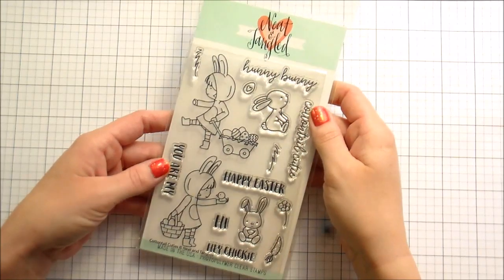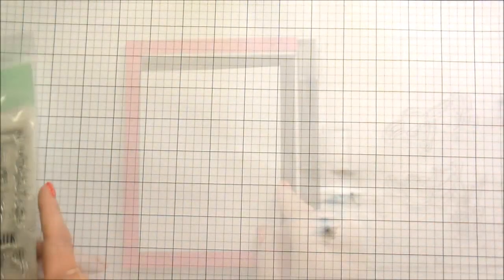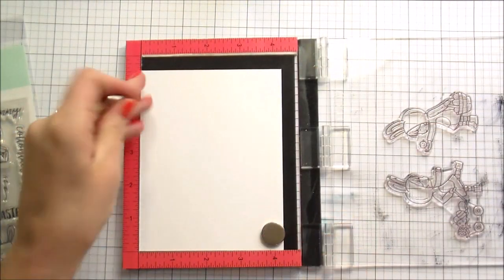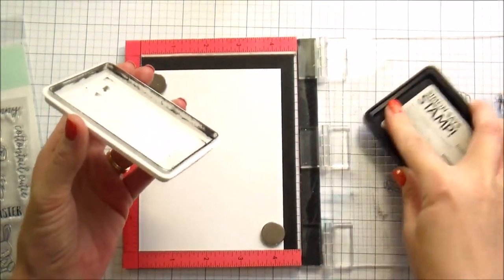Hi guys, it's Kelly here and I'm back with another video for Neat and Tangled. Today we're going to be using Cottontail Cuties to do a little bit of Copic coloring. So I have my mini Misti here, I already have my stamps laid in.